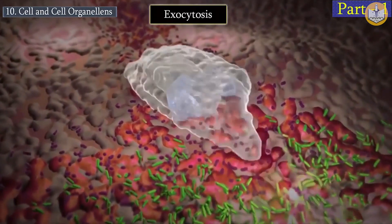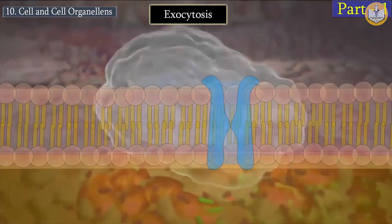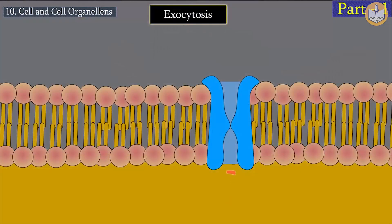Exocytosis is the process opposite to endocytosis. To excrete waste material out of the cell is known as exocytosis.